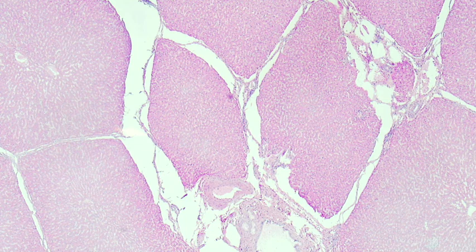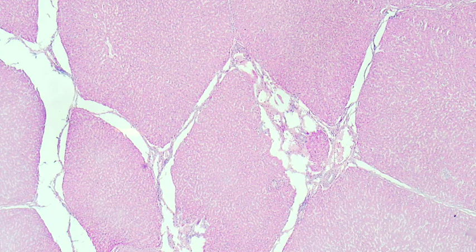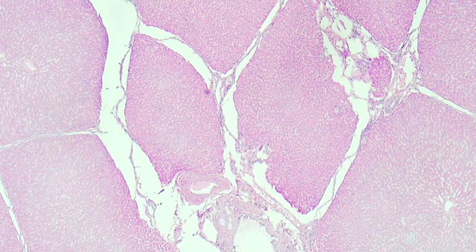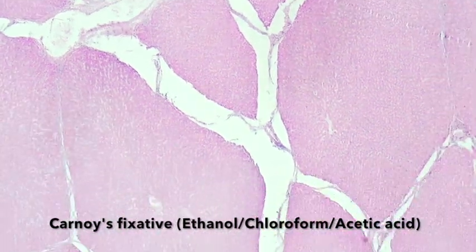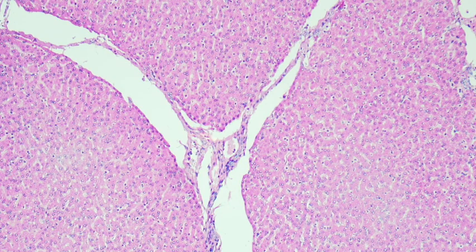Using straight alcohol results in a lot of tissue shrinkage, and that's what we can see here in this first example. It's an H&E stained section of liver, and there are prominent gaps which have emerged between each of the liver lobules. This is not straight alcohol — it's a mixture of alcohol with chloroform and acetic acid, which are supposed to offset the shrinkage effect, but we're still getting a reasonable amount of shrinkage.